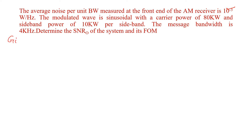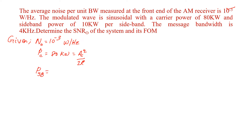Let us write what is given in the problem. The average noise per unit bandwidth is represented by N₀, which is equal to 10 raised to minus 3 watts per hertz. The carrier power PC is equal to 80 kilowatt, given by the formula AC square divided by 2R. The sideband power PSB is equal to 10 kilowatt, given by mu square AC square divided by 8R. The message bandwidth W is equal to 4 kilohertz.